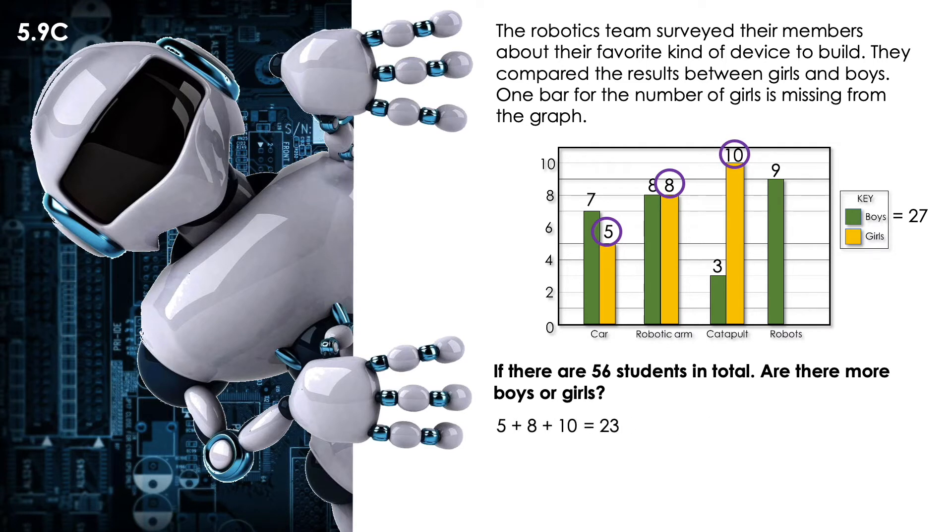So what can I do to find the rest of the girls? I can combine the boys and the girls and I will have a total of 50 students. But I'm still missing another amount of students. So how can I find how many students are left? I have to take away from the 56, 50. So I will have a total of six students left. Six students left are the girls. I'm just going to add 23 plus six and I will have a total of 29 girls. So there are more girls.